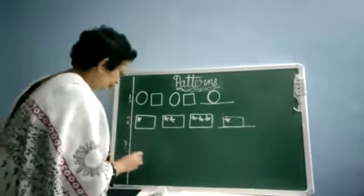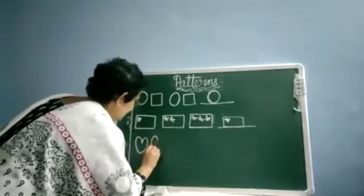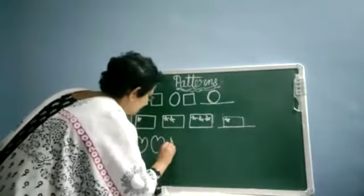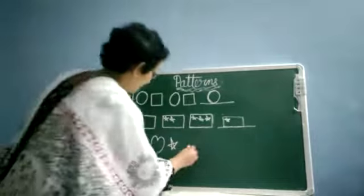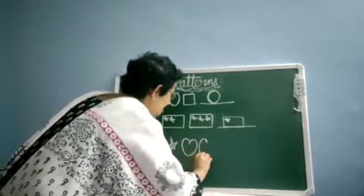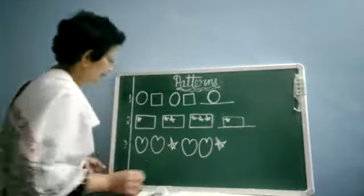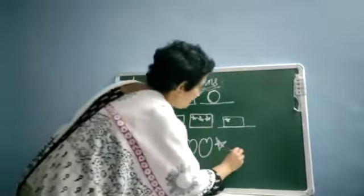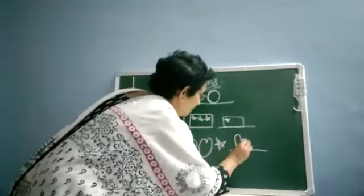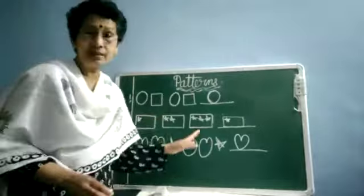Now third one is for you. Next one is two hearts, then one star. Now what will come next? Again another heart, one more heart, and it will come another star. Now what is the next one? What is the first one over here? That is our heart. That is going to come. So this is the way we have to complete our pattern.